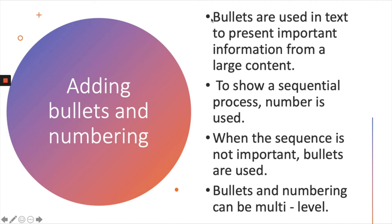These dots represent bullets. If you want to write a sequence of instructions — 1, 2, 3 — in that order, then you have to use numbers. When the sequence is not important and you only want to highlight the points, use bullets. If you want items in a particular order, you have to use numbers.